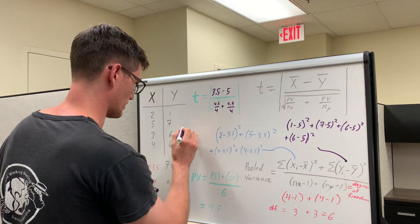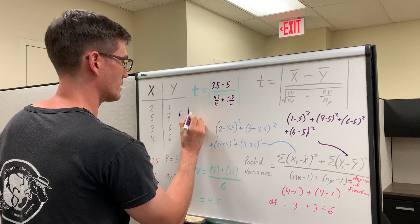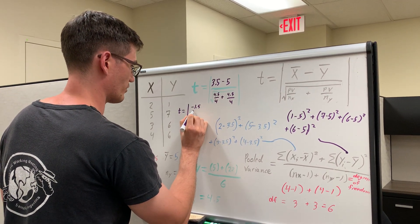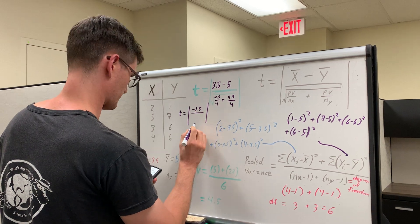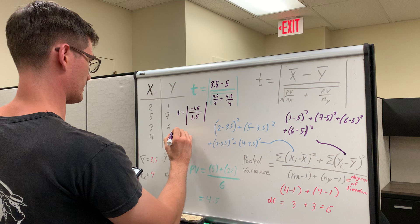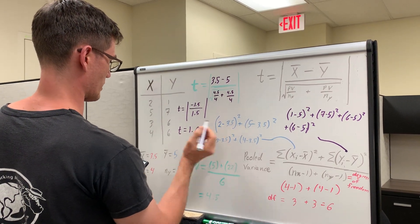So then we come back down here. t is equal to the absolute value, I guess this is technically negative 5, it doesn't really matter because of the absolute value sign. 1.5 all over 1.5. So then we have a t value, which turns out to be a nice clean number. This is kind of weird. t value equals 1.0.